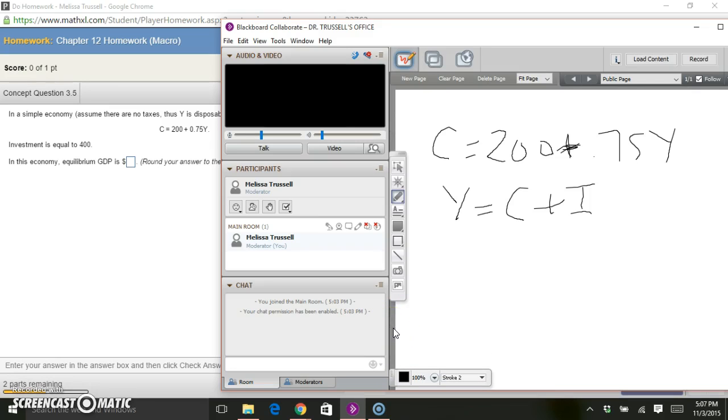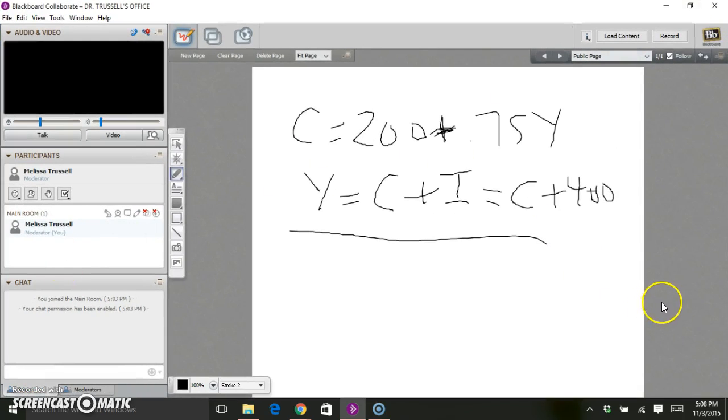We basically have two equations and two unknowns where we can solve for Y. They tell us what investment is, so we know our I is 400. We really have that Y equals C plus 400, and we want to find where both of these equations are true. I can rearrange this second equation so that C equals Y minus 400. That's just from this, because I know that Y equals C plus 400. C is just Y minus 400 if I subtract 400 from both sides of this equation.